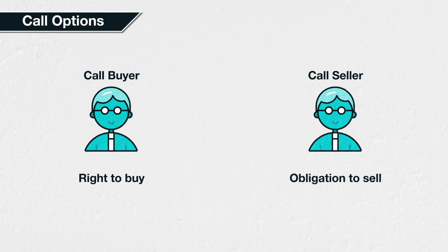In section 3 we will stick to call options in traditional markets, using examples where everything is denominated in US dollars. Then in section 4 we will move on to cryptocurrency call options. This will allow you to first learn the basic mechanics of call options without the added complexity that cryptocurrencies and inverse contracts bring. So let's begin in the next lecture with a simple example of how a company might use a call option.